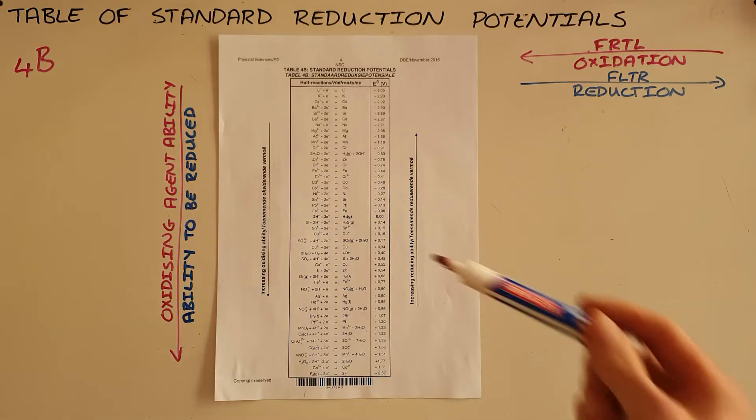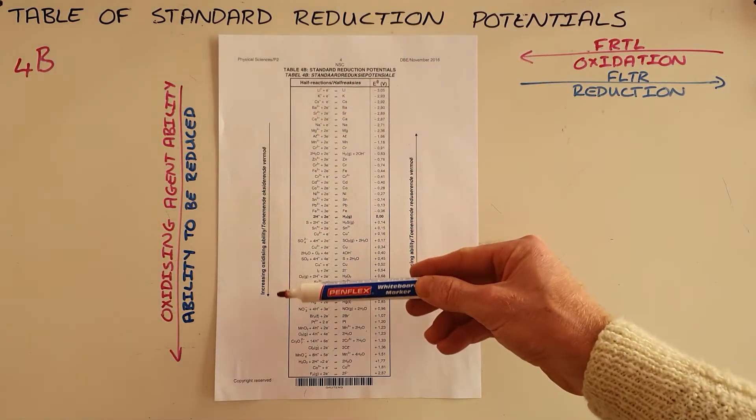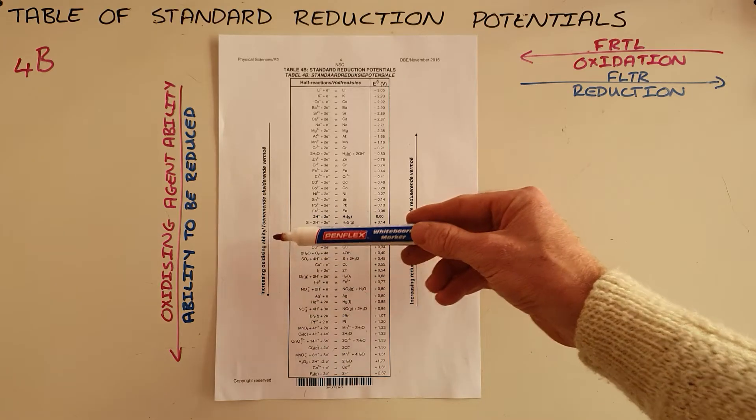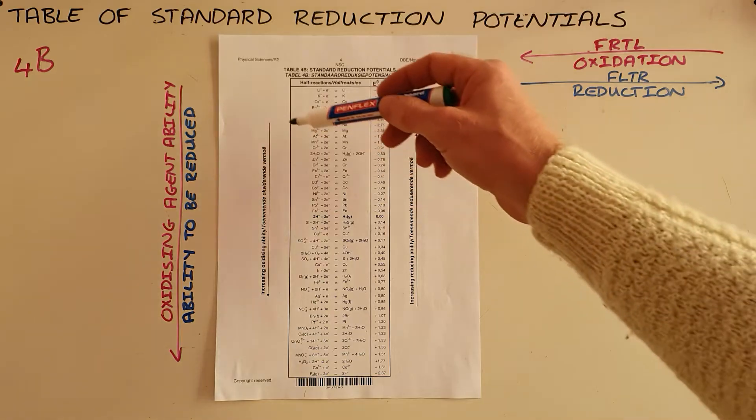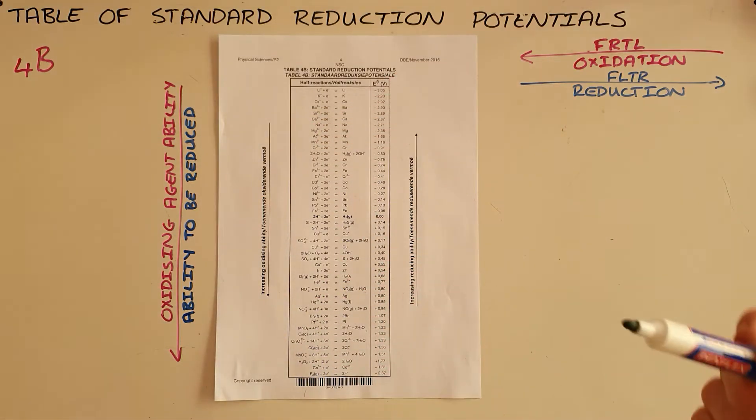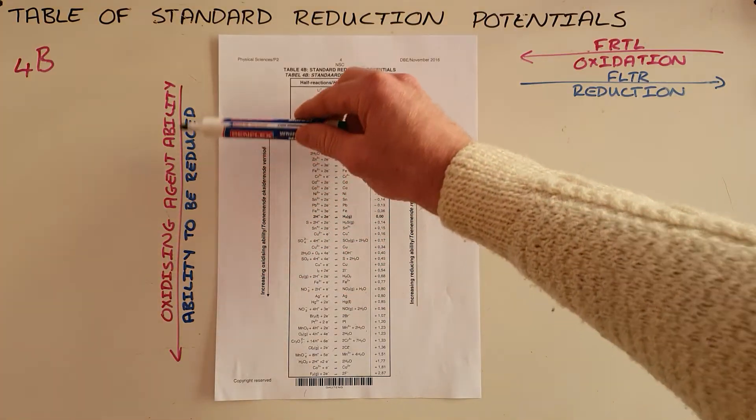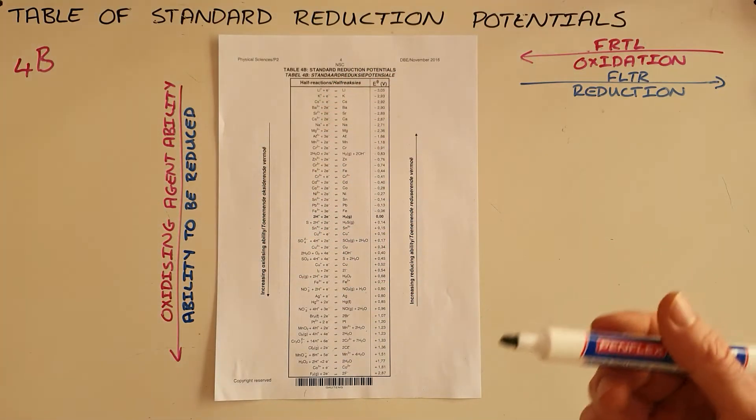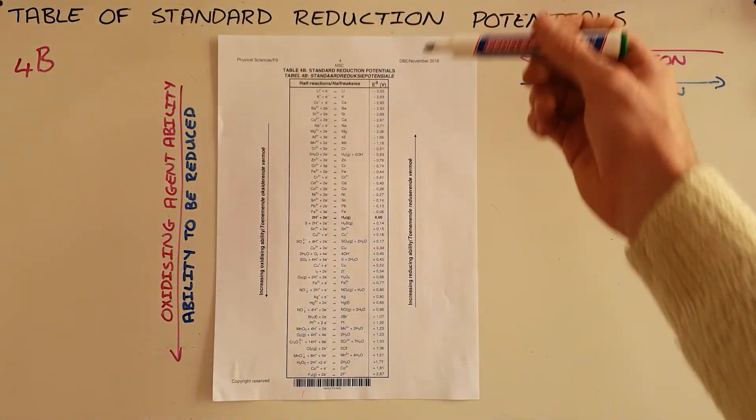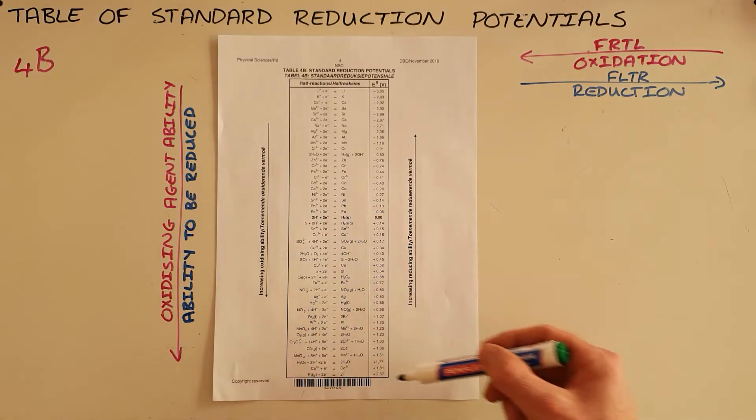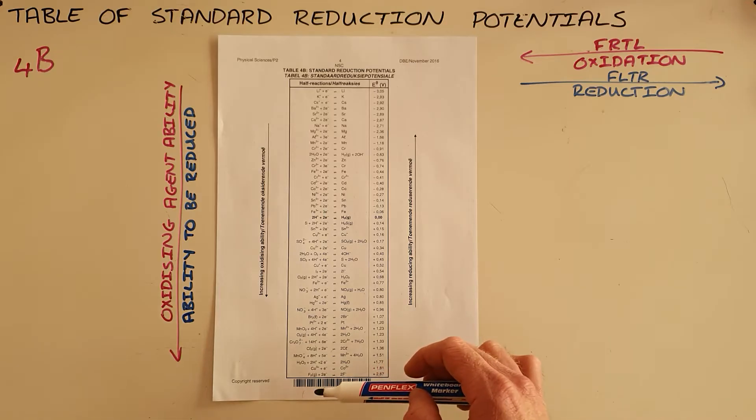Looking at the arrows down the left and right hand side, we see that the arrow pointing downwards states increasing oxidizing ability, which is often misinterpreted as the ability to be oxidized. What it actually means is increasing ability to act as an oxidizing agent, or more simply put, increasing ability to be reduced. Basically, the most easily reduced element on this table is fluorine right at the bottom.